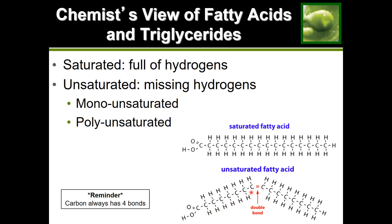But in the middle section, each of those carbons is only carrying one hydrogen each. The carbon is using its other bond to attach twice to the adjacent carbon — that's a double bond. This fatty acid is not carrying hydrogen to its maximum capacity, so it is unsaturated. Since we're missing hydrogens and not fully saturated, it is referred to as an unsaturated fat.